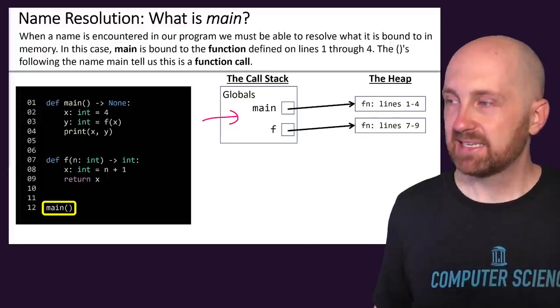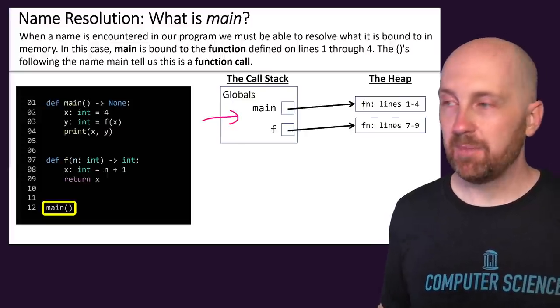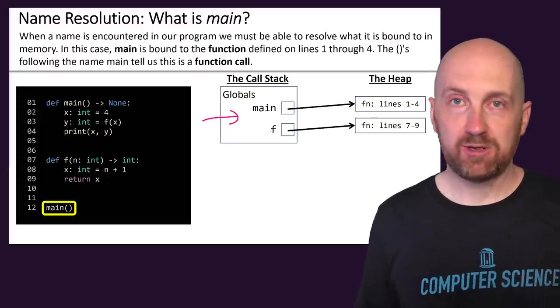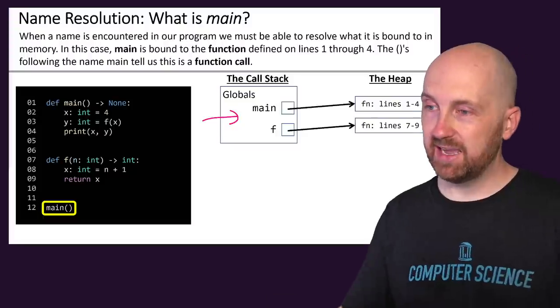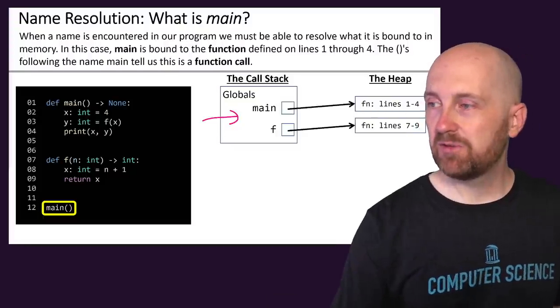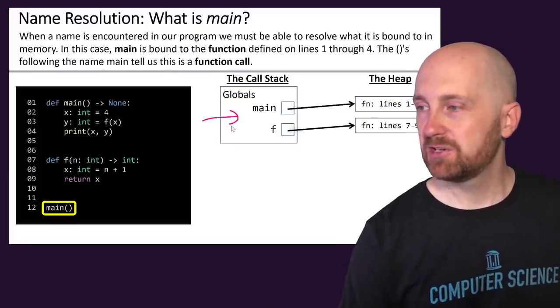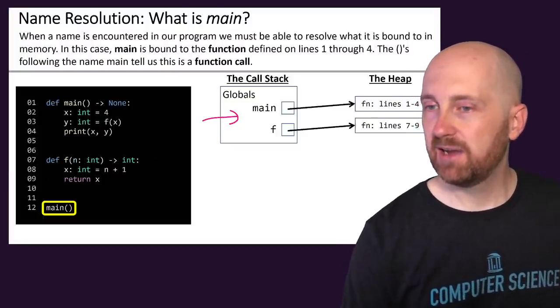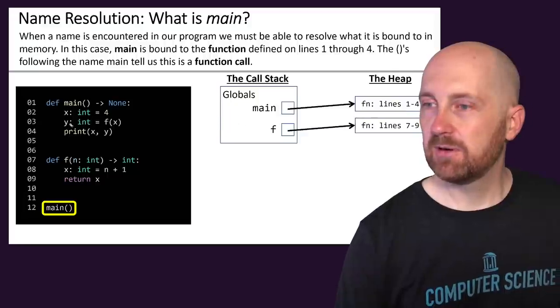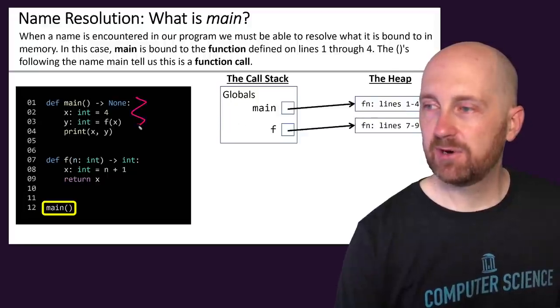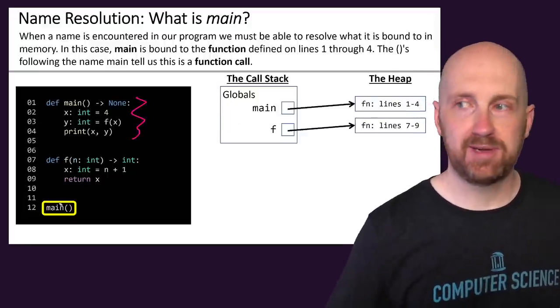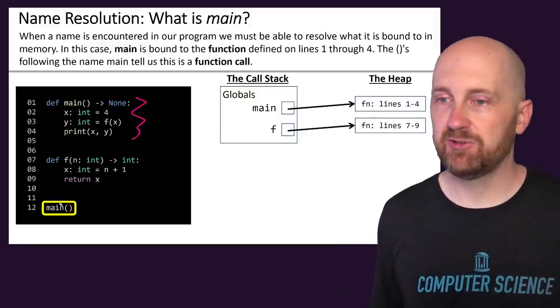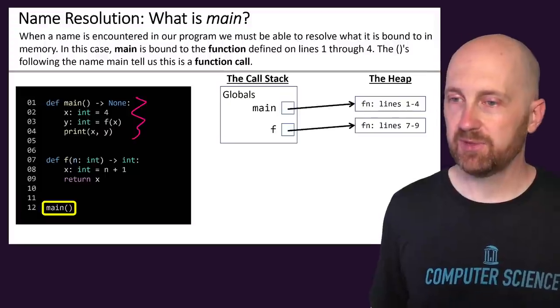We ask: is the name main found in globals? Yes, it's found in globals, and it's bound to the function defined on lines 1 through 4. So this is the function we're referring to, and we know that because the name has been associated with it.